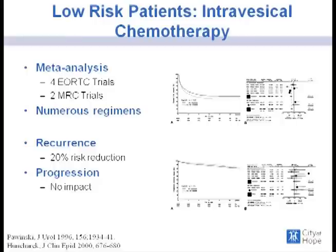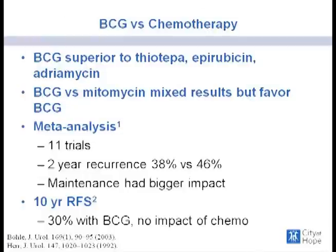In terms of intravesical chemotherapy — not including BCG — when compared to TUR alone, chemotherapy will prevent recurrence but usually does not have an impact on progression. It's controversial how long and how frequently intravesical chemotherapy must be given, and there are different maintenance regimens. When comparing BCG and intravesical chemotherapy, BCG seems to be superior to thiotepa, epirubicin, and adriamycin. Results are mixed when comparing BCG with mitomycin, but most results tend to favor BCG.